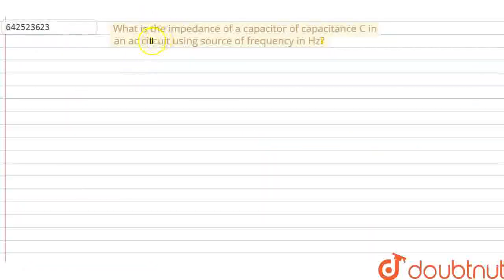Hello students, let us see what the question says. What is the impedance of a capacitor of capacitance C in an AC circuit using source of frequency in hertz?